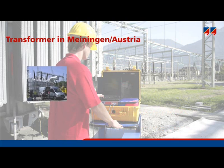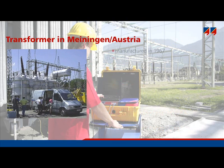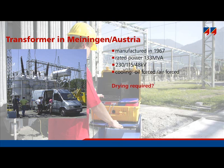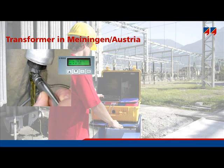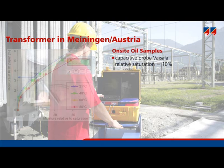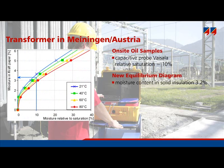Another example concerns a transformer built in 1967. The owner planned to transport it to another substation with the expectation that it could be operated for an additional 10 to 20 years. Before it could be moved, it was necessary to measure its moisture content to decide whether drying would be required. Both oil sampling and dielectric response methods were used. Through on-site measurement, the relative saturation of the oil was found to be 10%, and applying the new equilibrium diagram at 30°C indicated a moisture content of 3.2% in the solid insulation.